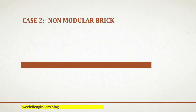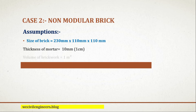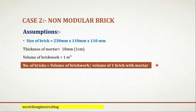Now let's see how many non-modular bricks are required for one cubic meter of brick work. Here are the assumptions for case 2: size of brick equals 230 mm by 110 mm by 110 mm. The thickness of mortar and the volume of brick work remain the same — thickness of mortar equals 10 mm and volume of brick work equals 1 cubic meter. The formula is the same: number of bricks equals volume of brick work divided by volume of one brick with mortar.